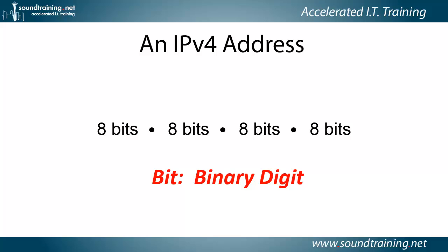A bit is simply a contraction of the term binary digit. Every IPv4 address is made up of a total of 32 bits, divided into four sections, again called octets or bytes.